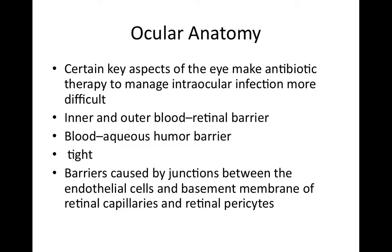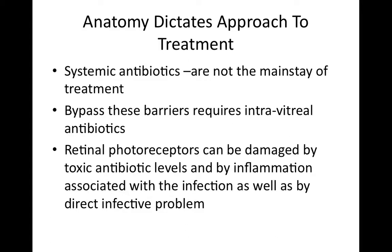These are aspects such as the inner and outer blood-retinal barrier and the blood-aqueous humor barrier. These barriers are essentially caused by tight cellular junctions between endothelial cells and their basement membrane of retinal capillaries, and also in the blood-aqueous barrier around the pigmented and non-pigmented ciliary body epithelium.